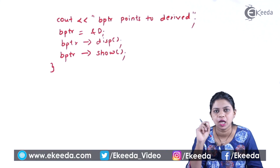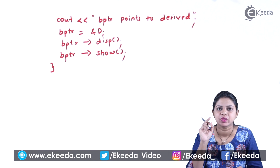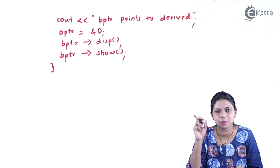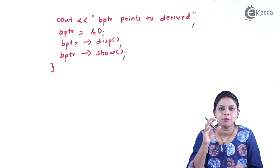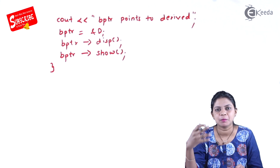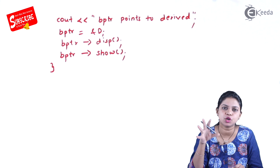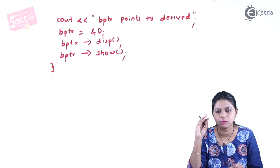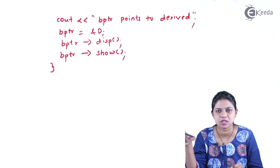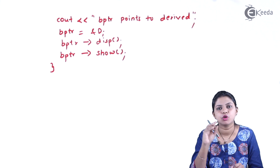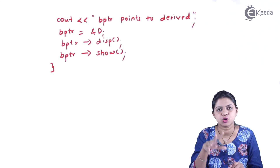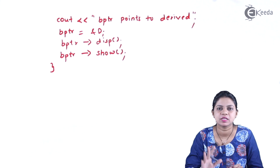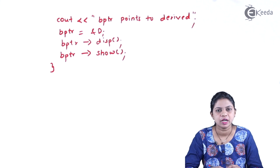To get the output of the derived class, I will use the keyword virtual. Wherever there are functions in the base class whose names are the same as functions in the derived class, I will make those functions virtual in the base class. When the base pointer points to the base class you get the base class answer, and when it points to the derived class you get the derived class answer. That is the use of virtual function — without it you keep getting the base class answer.